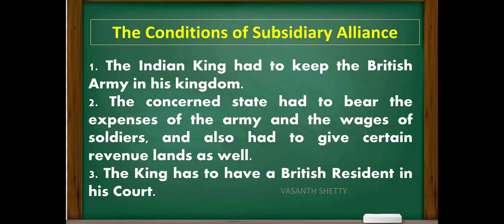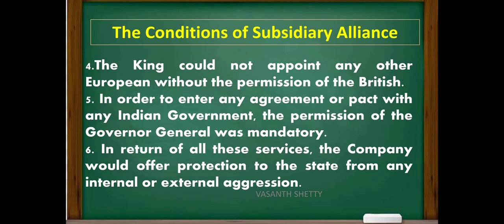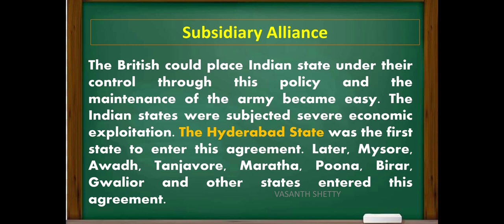The terms and conditions of the Subsidiary Alliance were: first, the Indian king had to keep the British army in his kingdom; second, the concerned state had to bear all the expenses of the army, wages of soldiers, and give certain revenue lands; third, the king had to have a British Resident in his court; fourth, the king could not appoint any other European without British permission. In return, the company would offer protection from internal and external aggression. The British could place Indian states under their control and the maintenance of the army became easy.